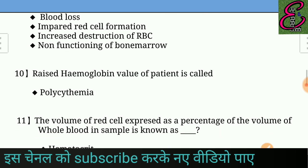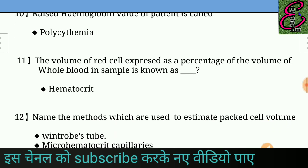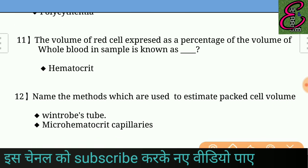Question number ten: A raised hemoglobin value is called — answer: polycythemia. Question number eleven: The volume of red cells expressed as a percentage of the volume of whole blood in a sample is known as — answer: hematocrit.